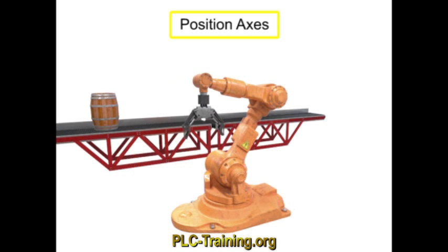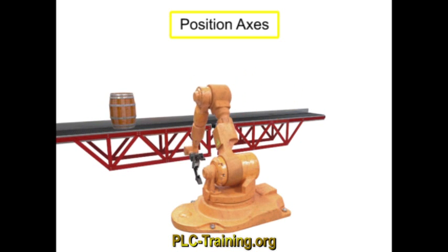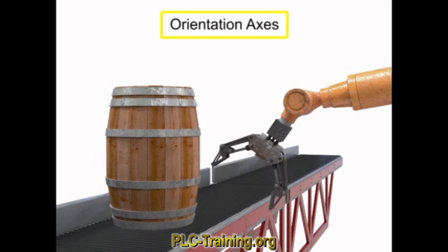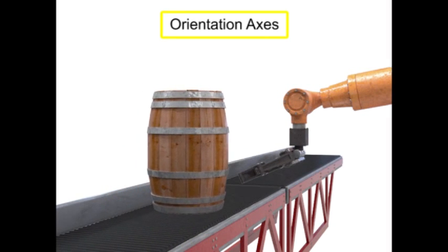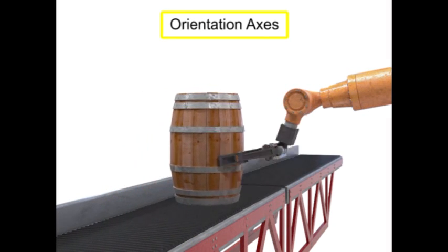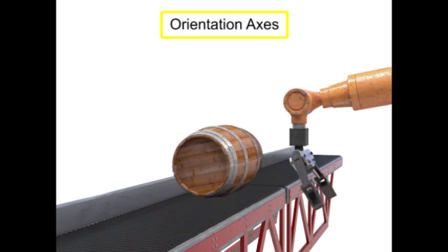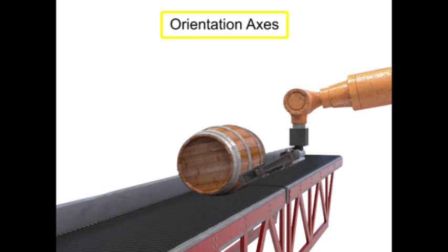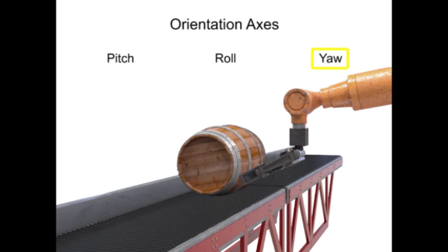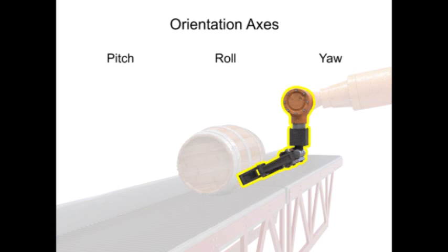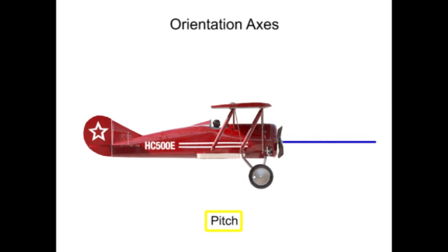While the position axes locate the tool in the work area, the orientation axes help orient the tool in relation to the work piece. The types of movement along orientation axes are defined as pitch, roll, and yaw. These movements all occur from the same joint, the wrist, but along three distinct axes. This type of movement is most easily illustrated as it relates to aircraft movement.